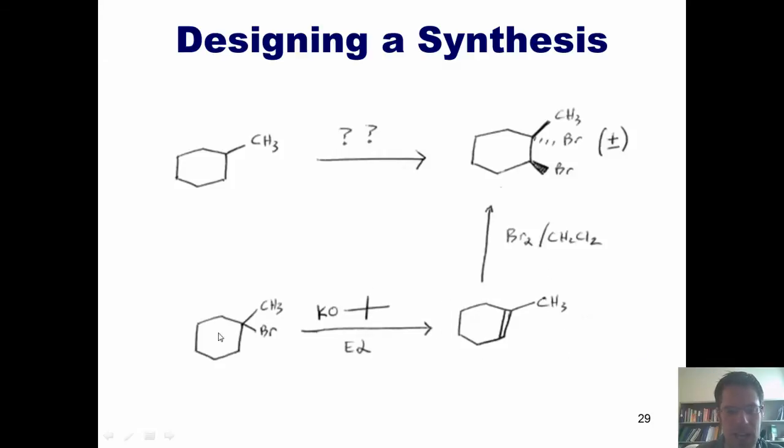But how in the world could I make this product? Well, you can imagine working backwards that if I had a bromine at this position, and treated this molecule with a big bulky base like potassium tert-butoxide, it would do an E2 reaction, grabbing a hydrogen at this position, pumping the electrons down, and kicking off the bromide in one fell swoop, to give me the more stable, more substituted Zaitsev product shown here.